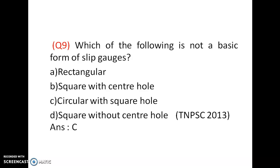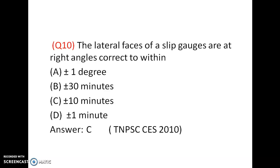Which of the following is not a basic form of slip gauges? Options are: rectangular, square with center hole, circular with square hole, and square with center hole. Slip gauges are always in the form of rectangular. Square with center hole and square without center hole are available, but circular slip gauges are not available. The answer is C.